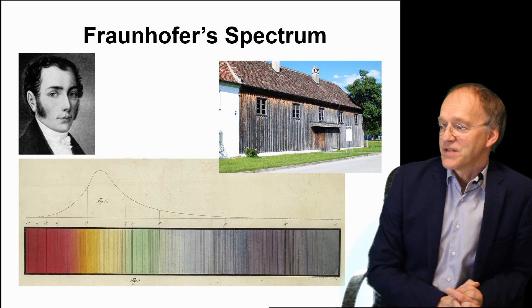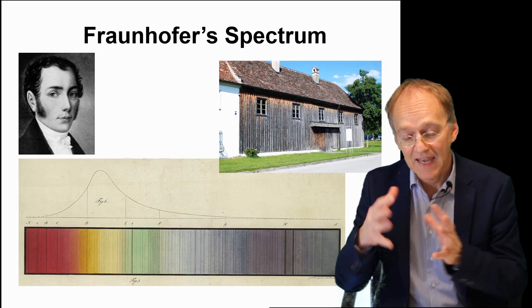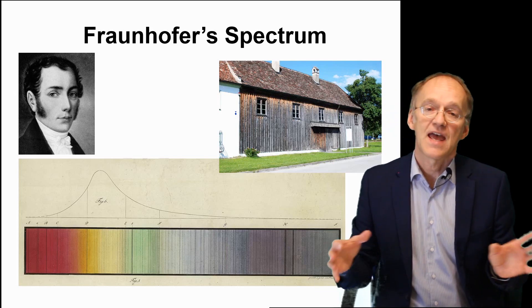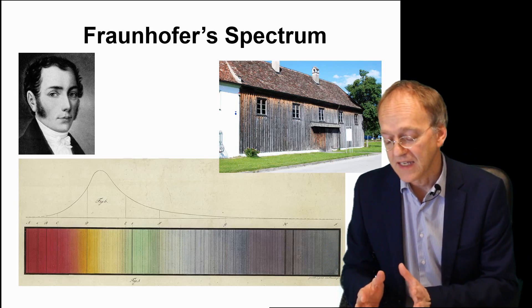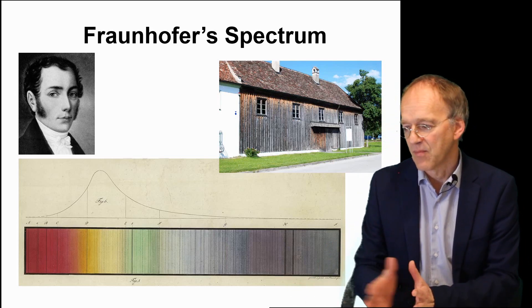Josef Fraunhofer, a physicist back in 1800, managed to put together different types of glasses and produce lenses that did not have chromatic aberration any longer, and for that reason were much more precise in measuring wavelength.